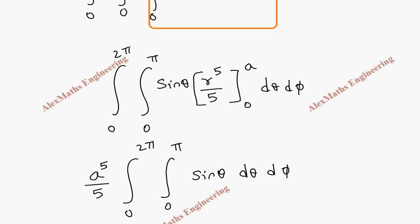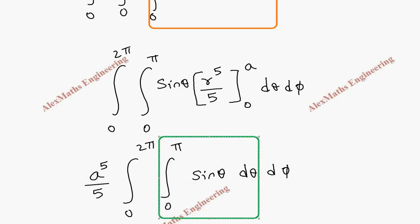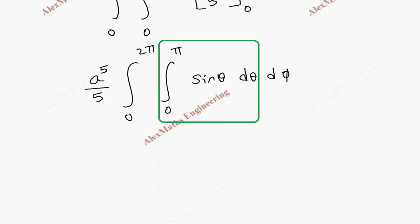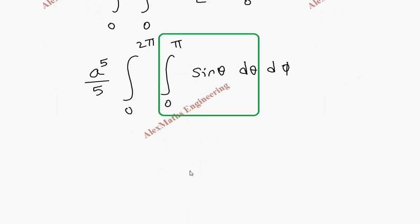As the second step we evaluate with respect to θ, which gives −cosθ. Substituting the limits from 0 to π gives −cos π − (−cos 0) = 1 + 1 = 2.